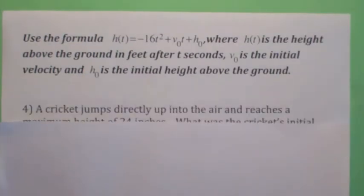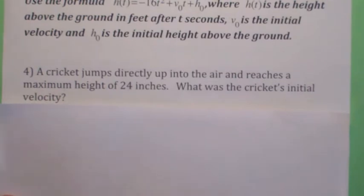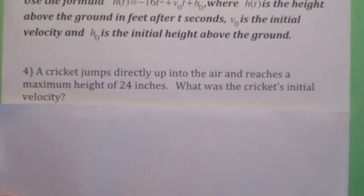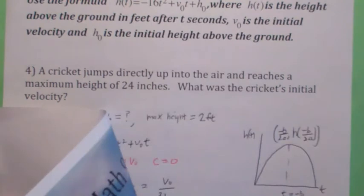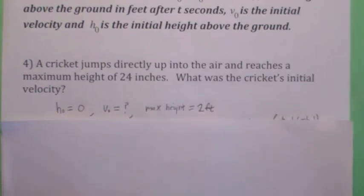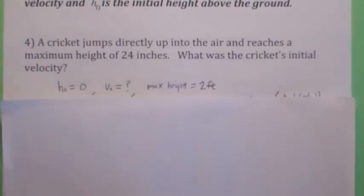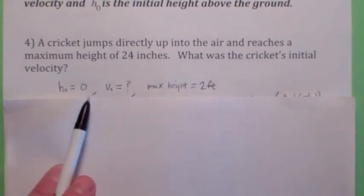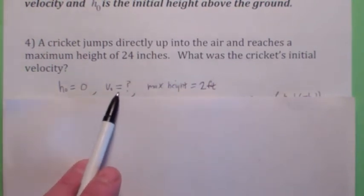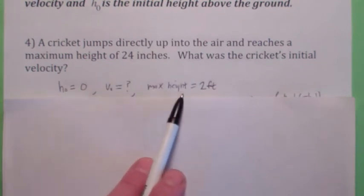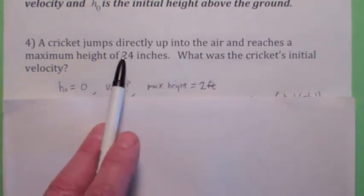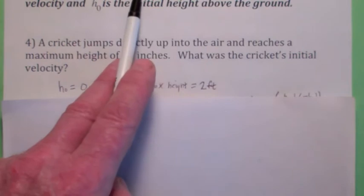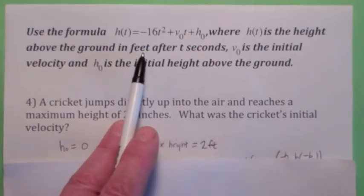We're using the same formula. This one, I made this one up. Can you tell? We have a cricket that jumps directly up into the air and reaches a maximum height of 24 inches. And the question is what was the cricket's initial velocity. So again, it would be okay to assume that h₀ is zero. They don't tell us what the initial velocity is. I think that's what the question asked for. They do tell us the maximum height is 24 inches. But isn't that mean? You have to use feet. Otherwise this formula isn't valid.